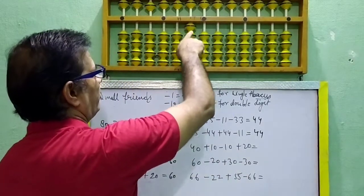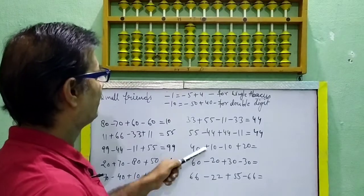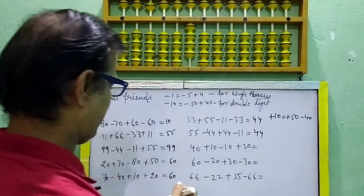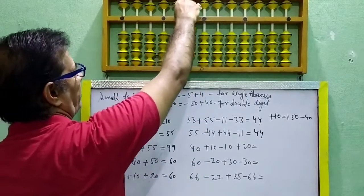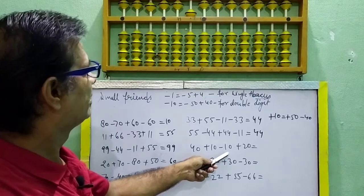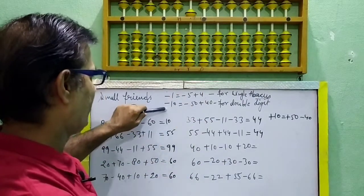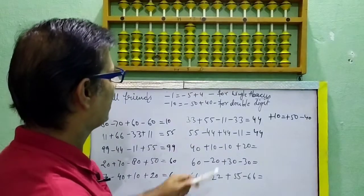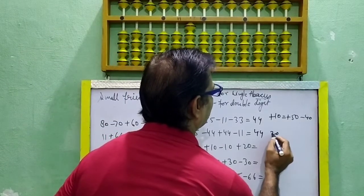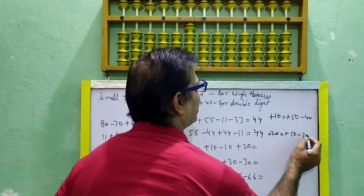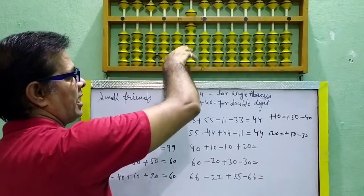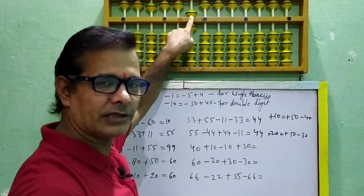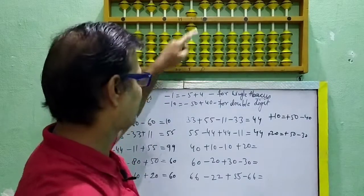Next question: 40. Plus 10 — plus 10 formula, plus 10 is equal to plus 50 minus 40. Plus 10: plus 50, minus 40. And then plus 40. And then plus 20 — plus 20 formula. Plus 20 is equal to plus 50 minus 30. Plus 50, minus 30 — 10, 10, 10, 30. So your answer is here: 6 or 60? 60. This is a tens place — 60.